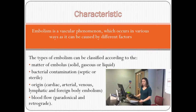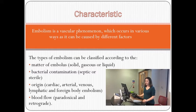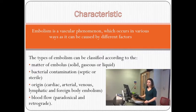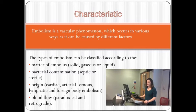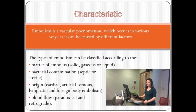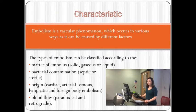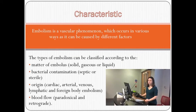Embolism occurs in various ways as it can be caused by different factors. The types of embolism can be classified according to the matter of the embolus, which can be solid, gaseous, or liquid; bacterial contamination, which can be septic or sterile; origin, which can be cardiac, arterial, venous, lymphatic, or foreign body embolism; and according to the blood flow, where it can be paradoxical or retrograde.